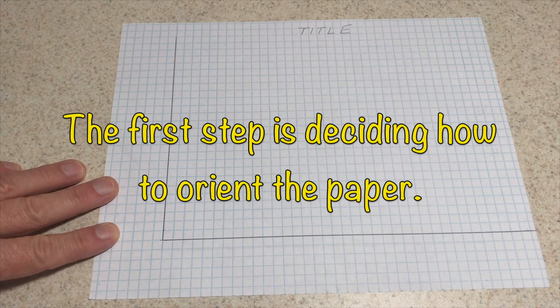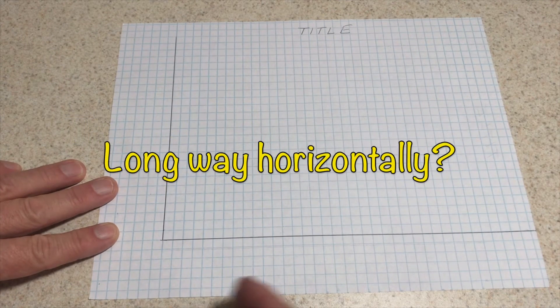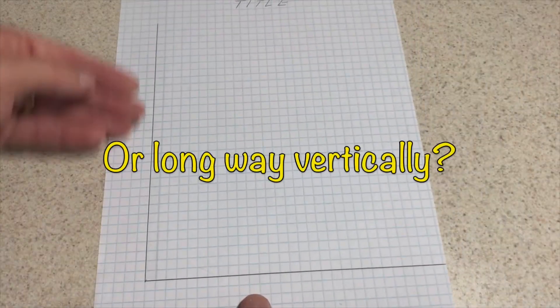The first step is deciding how to orient the paper, long way horizontally or long way vertically.